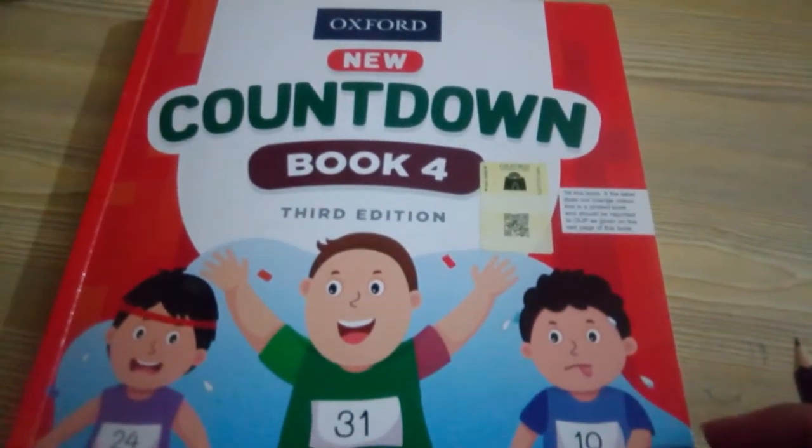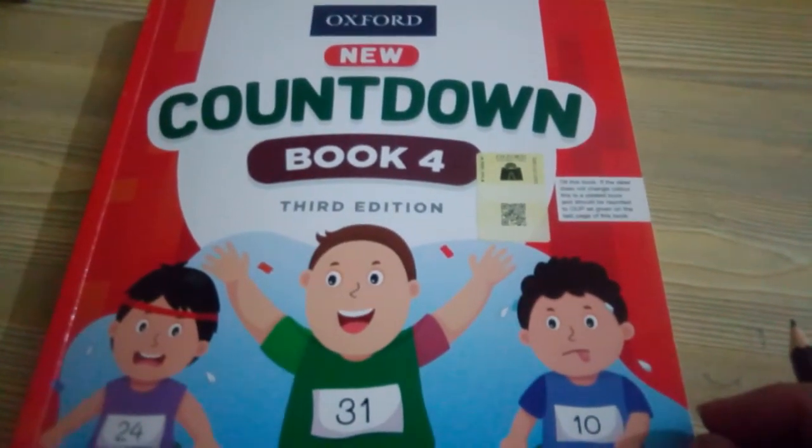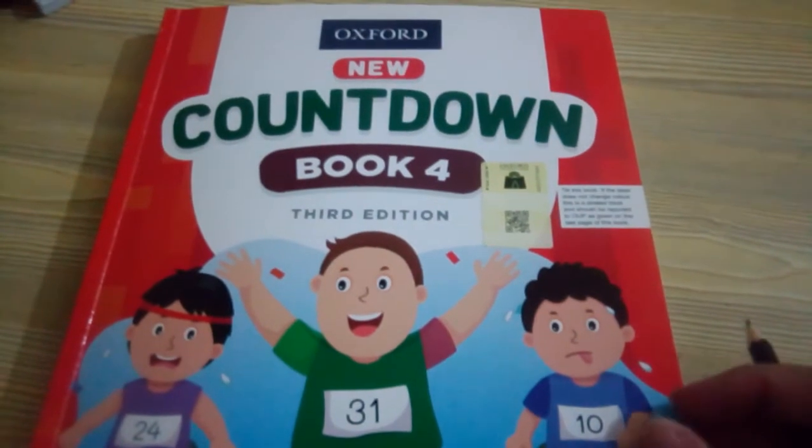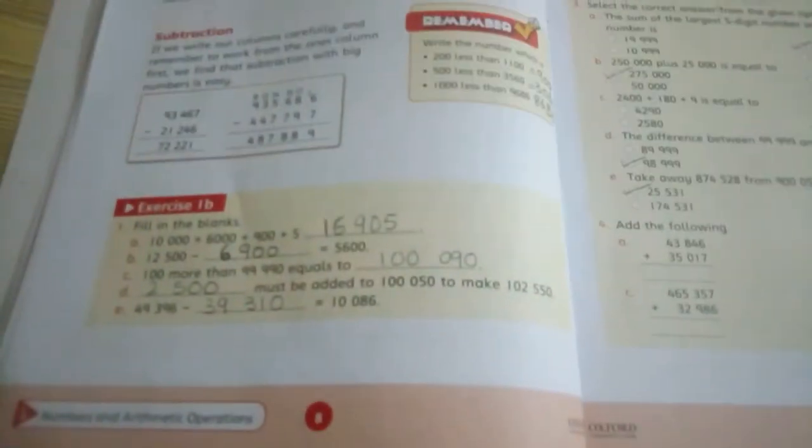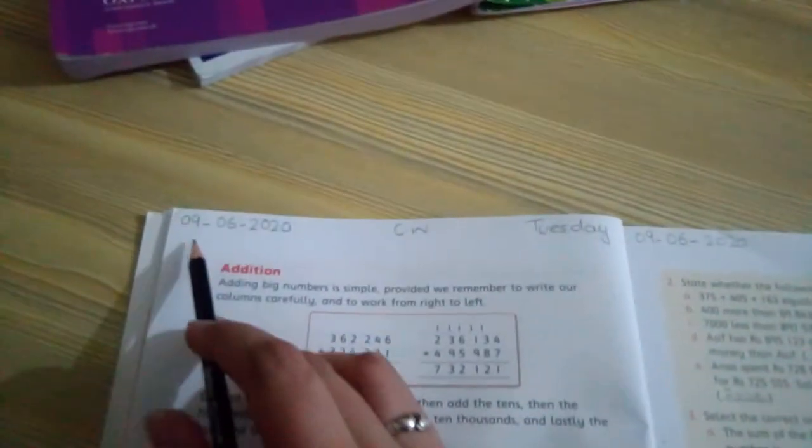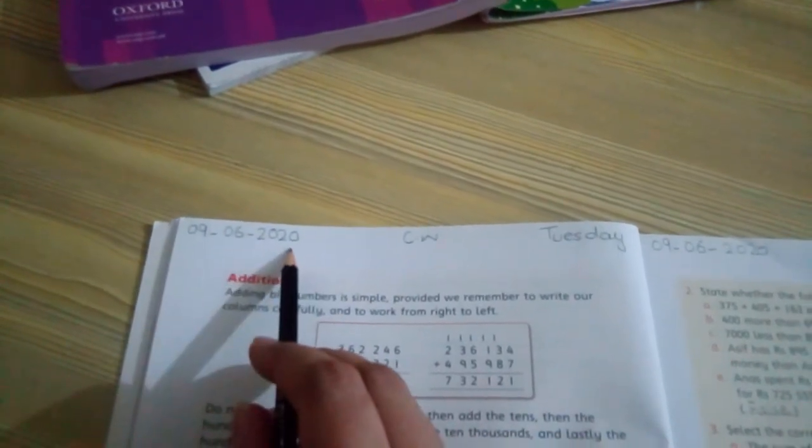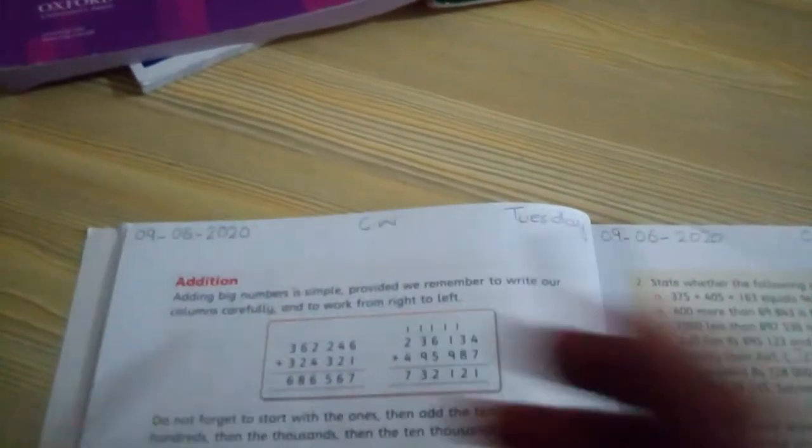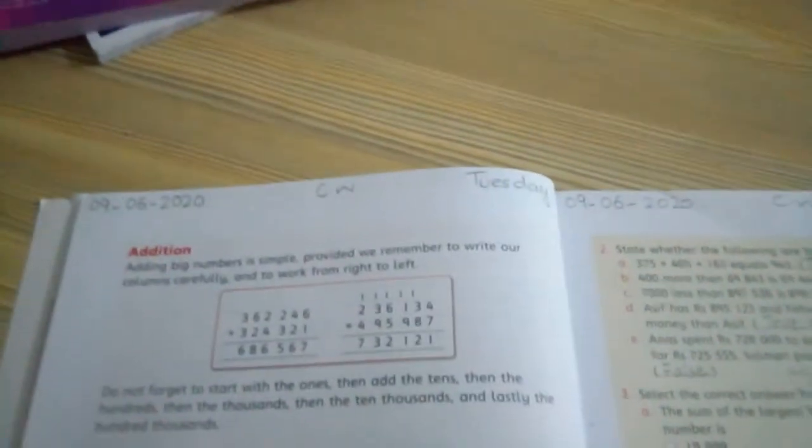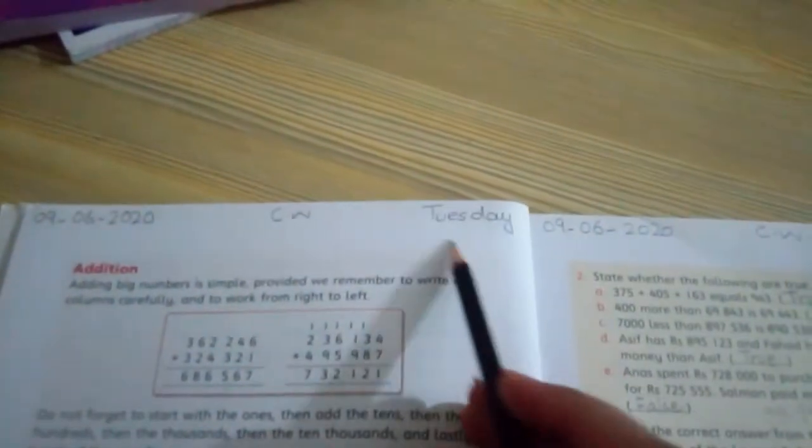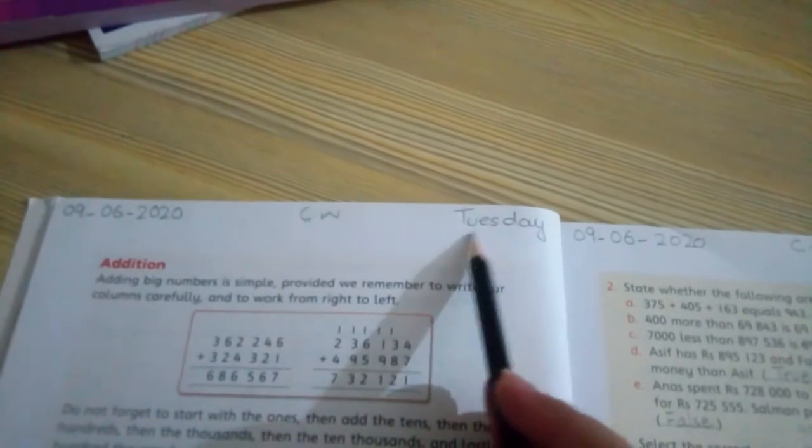Assalamualaikum students, today we are going to start work on Countdown book 4. We will take out the new page that we will do today, which is page number 8. First, you have to write the date on the top left side: 9-6-2020. Write classwork in the middle (C.W.) and write the day on the top right side: Tuesday.